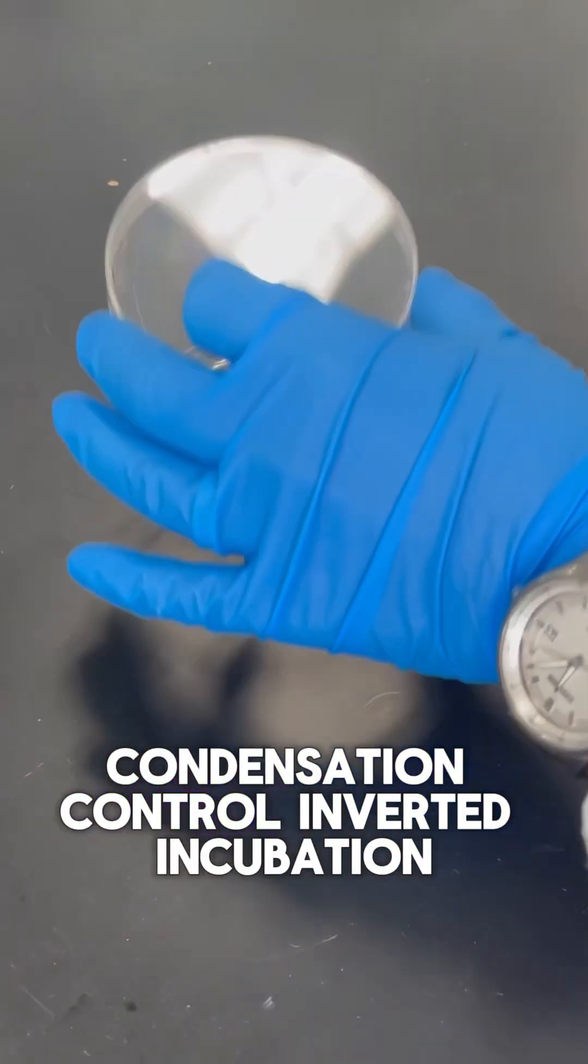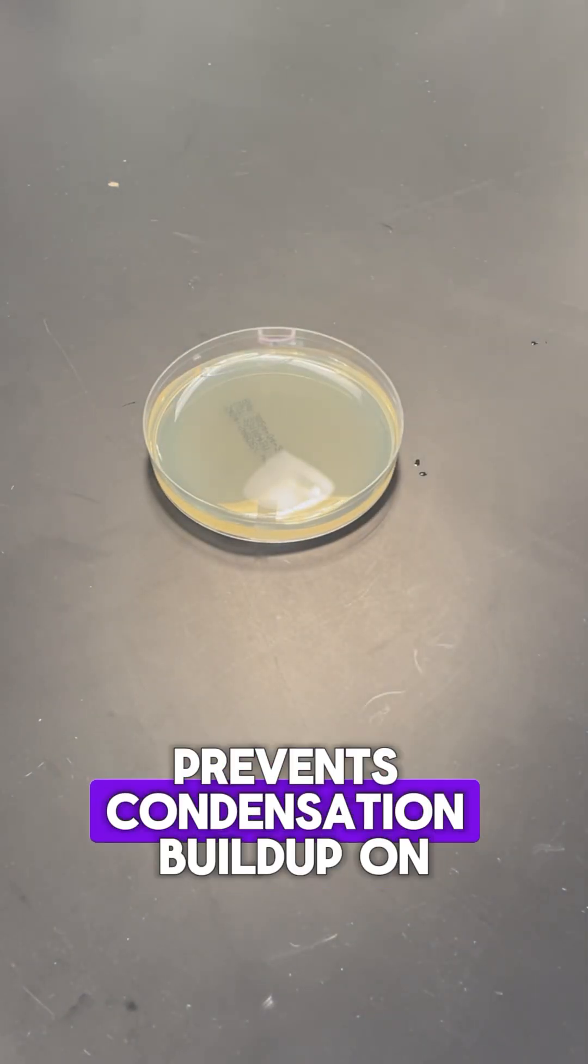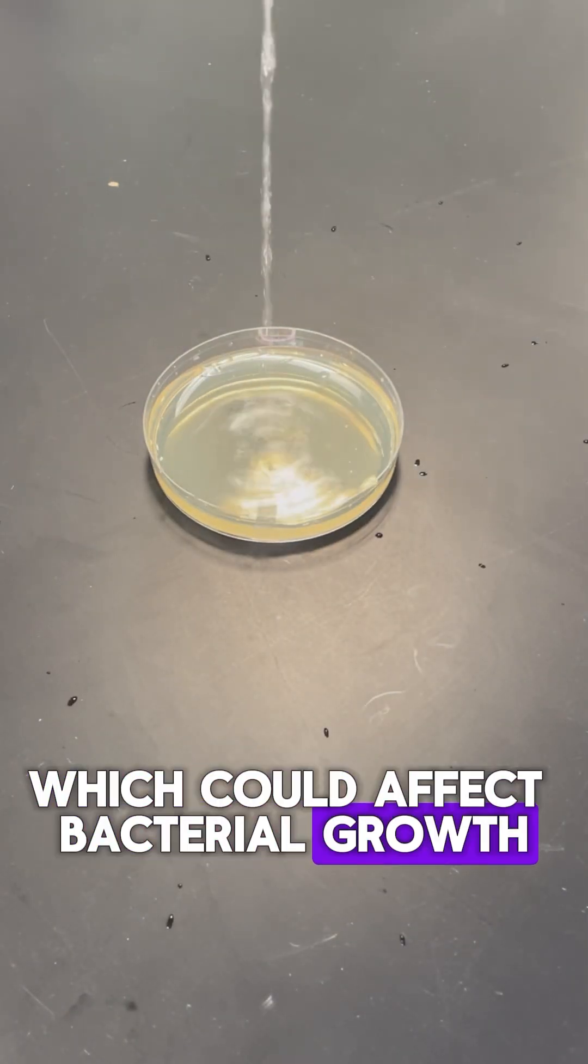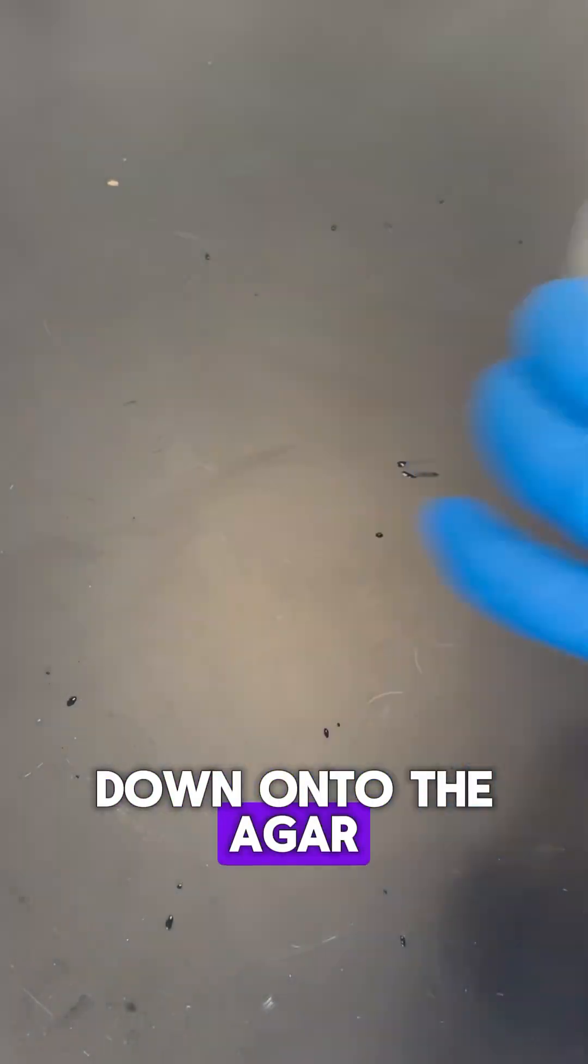1. Condensation control. Inverted incubation prevents condensation buildup on the lid, which could affect bacterial growth if the water drips down onto the agar.